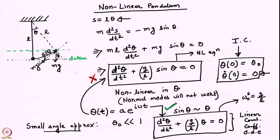The normal mode approximation will not be appropriate because this is a non-linear equation. If you substitute θ equal to some amplitude a times e^(iωt), this non-linear equation cannot be satisfied the way we did it in the case of linear equations. We also discussed that this equation is typically solved in the small angle approximation where sinθ is approximated as θ.